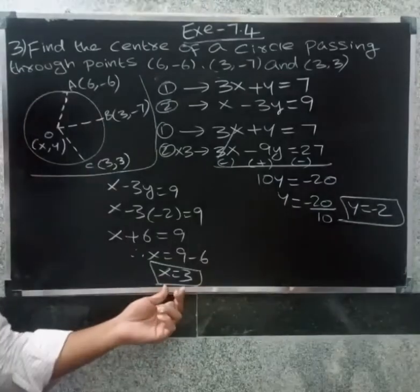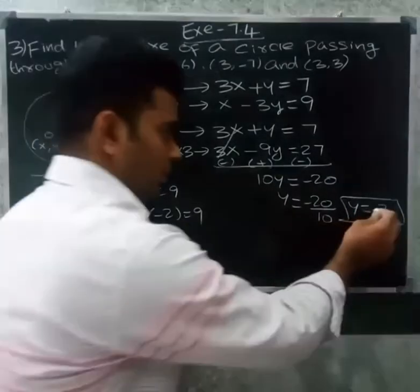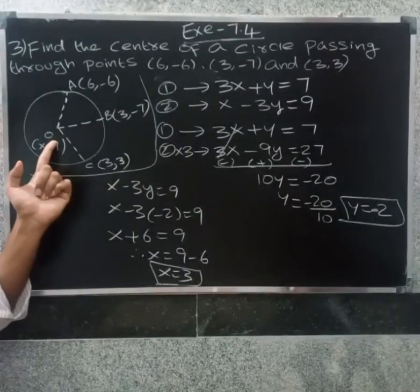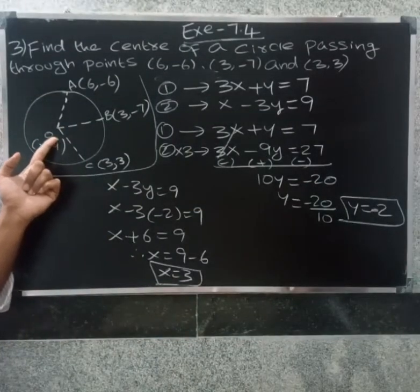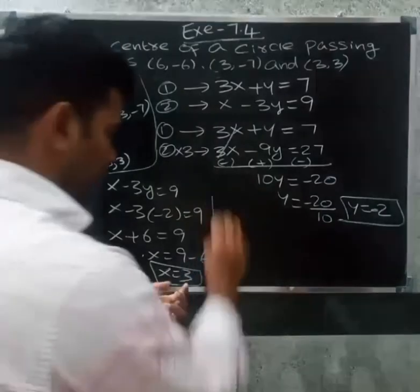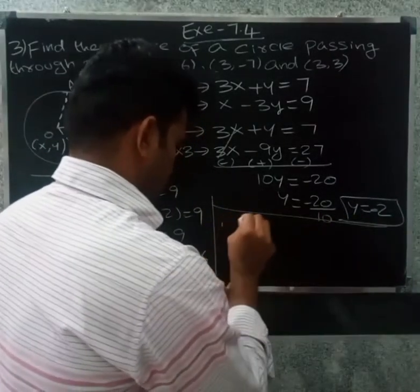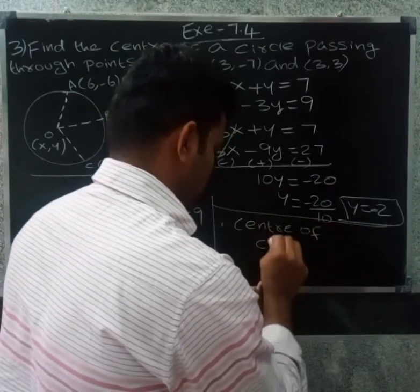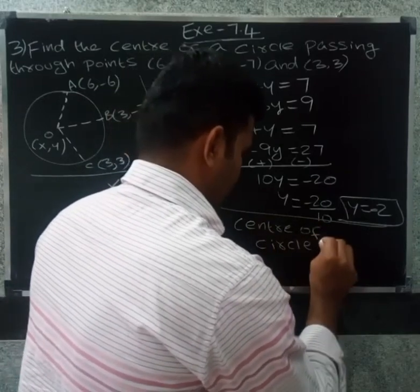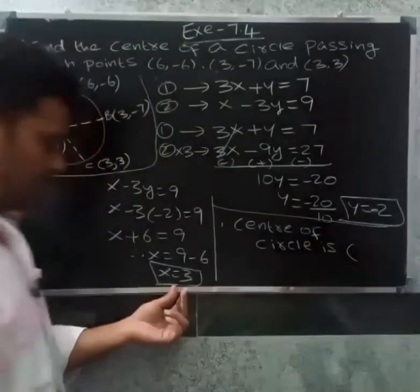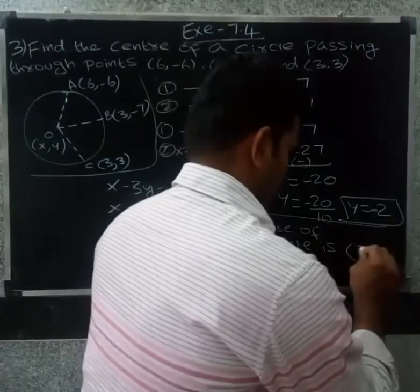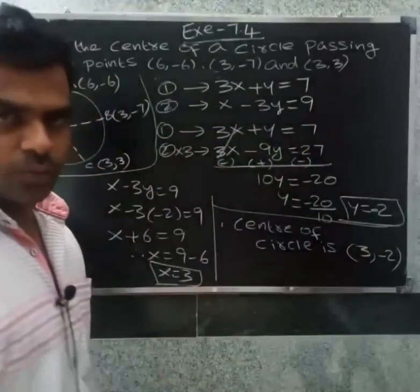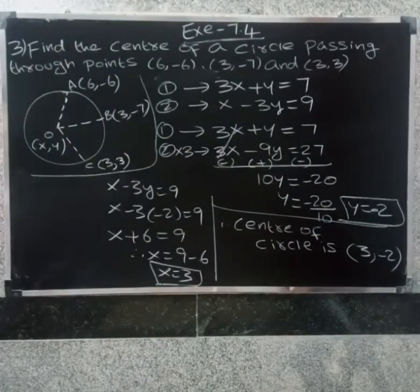Therefore x equal to 3 and y equal to minus 2. The center of the circle is (3, minus 2). Thank you.